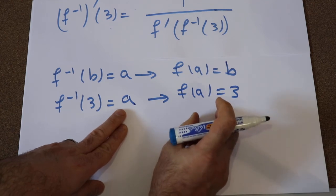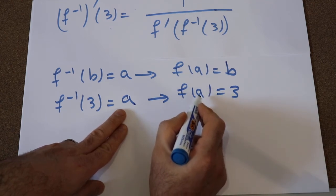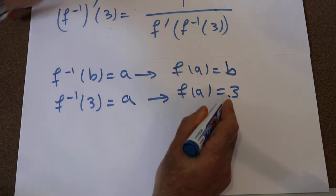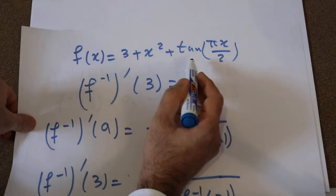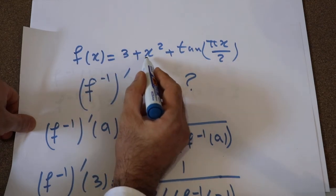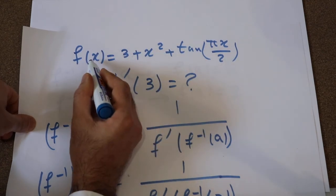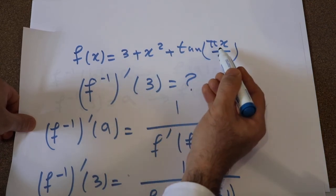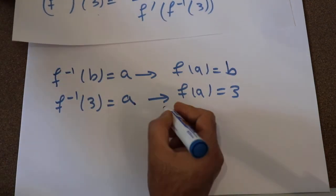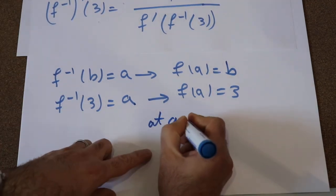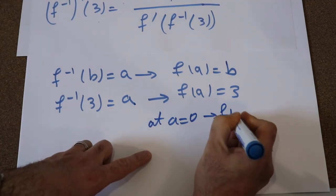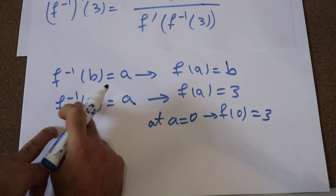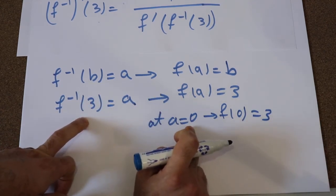You need to look at the function and find the value of a at which f equals 3. If you look at this equation, you can easily see that at x equal to 0, f(0) is equal to 3 because 3 plus 0 plus tangent(0) equals 0. In other words, at A equal to 0, f(0) equals 3. That means f⁻¹(3) equals a, which equals 0.